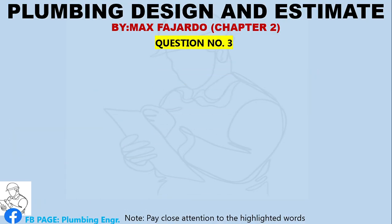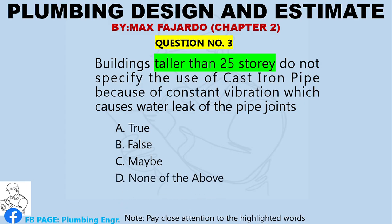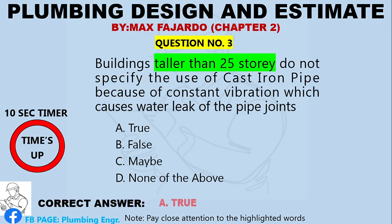Question Number 3. Buildings taller than 25 stories do not specify the use of cast iron pipe because of constant vibration which causes water leak of the pipe joints. A. True. B. False. C. Maybe. D. None of the above. Correct answer: Letter A, True.